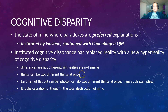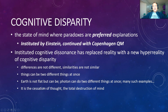Einstein did that. Copenhagen quantum mechanics does that. In climate science — here's a great one — Earth is not flat, but it also can be flat. Photons can be two different things at once. There are many such examples in the current world. So it's the cessation of thought; it is the total destruction of mind that is happening.